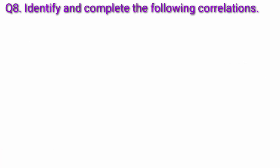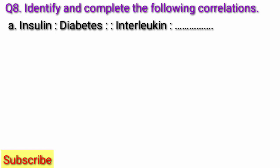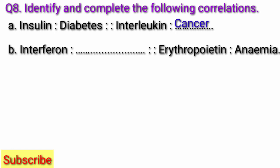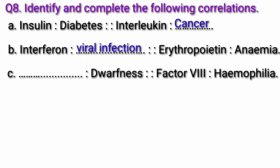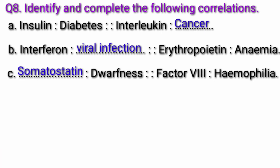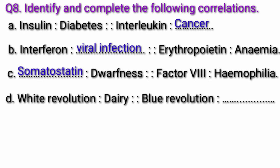Question 8: Identify and complete the following correlations. A. Insulin — Diabetes — Interleukin — Cancer. B. Interferon — Viral Infection; Erythropoietin — Anemia. C. Somatostatin — Dwarfness; Factor VIII — Hemophilia. D. White Revolution — Dairy; Blue Revolution — Fishery.